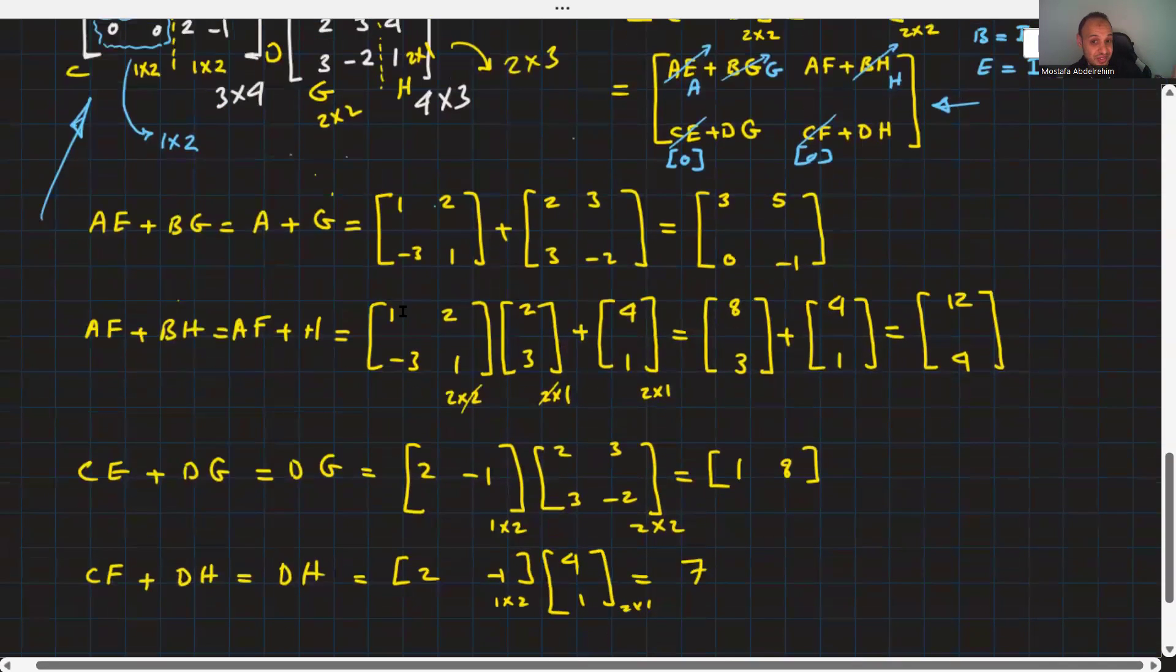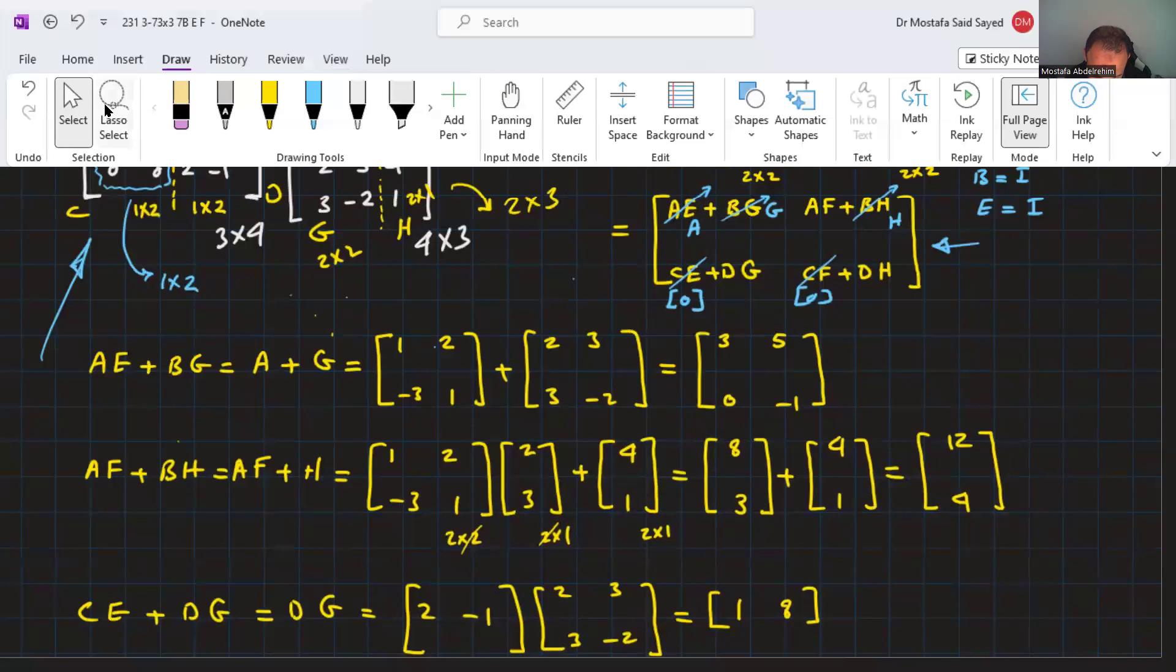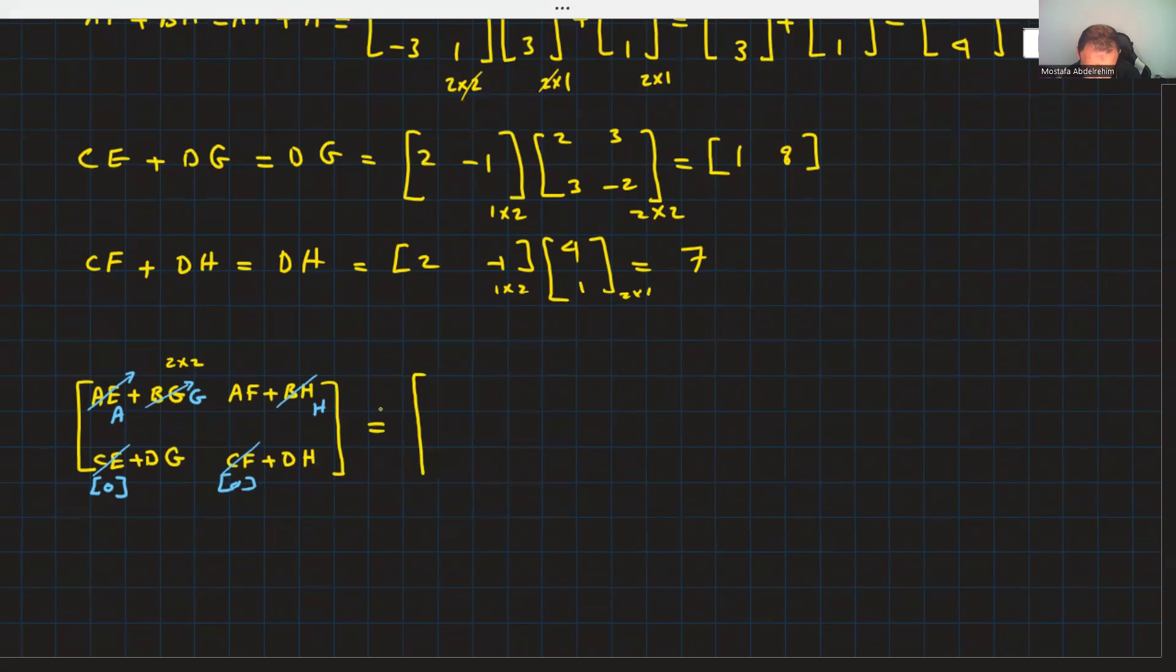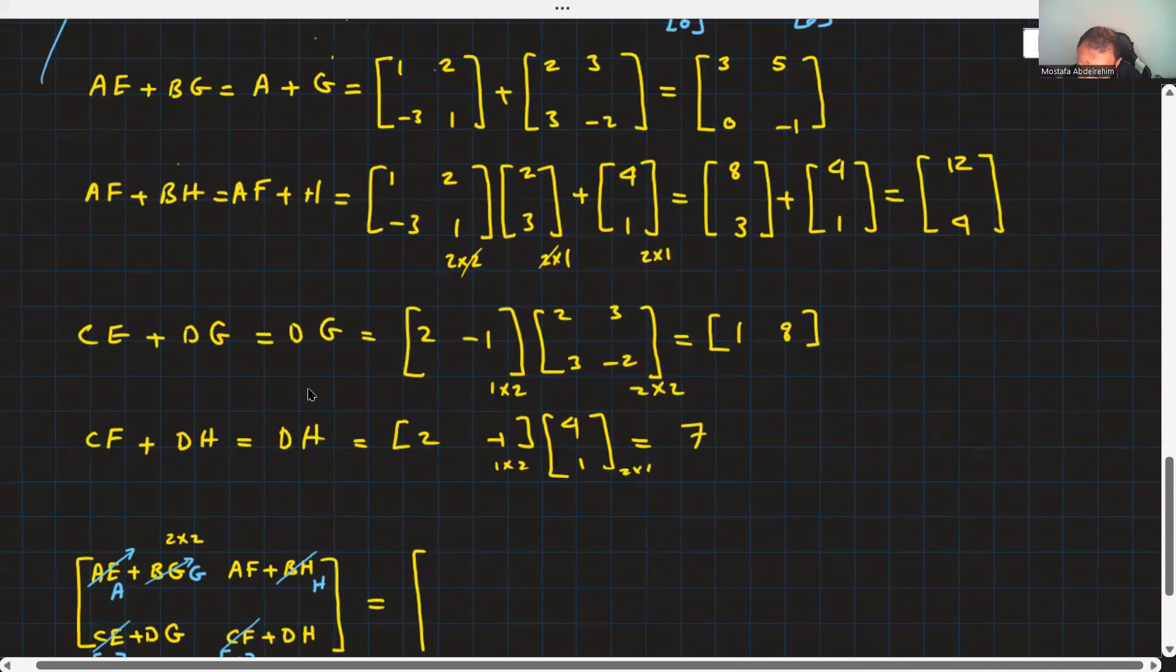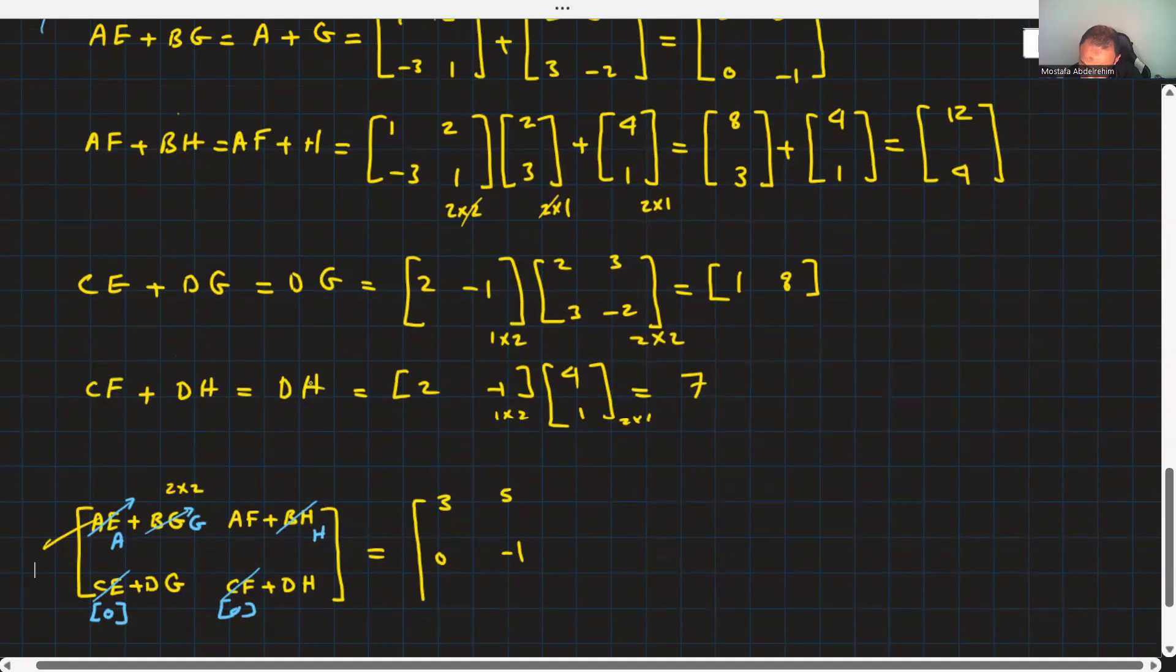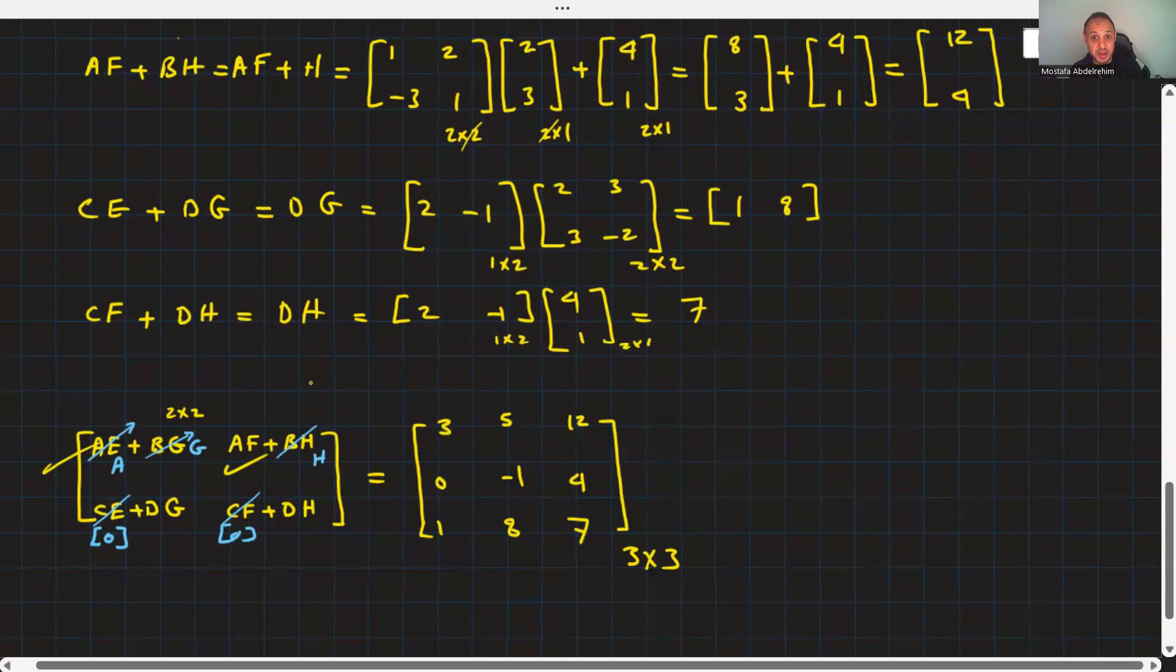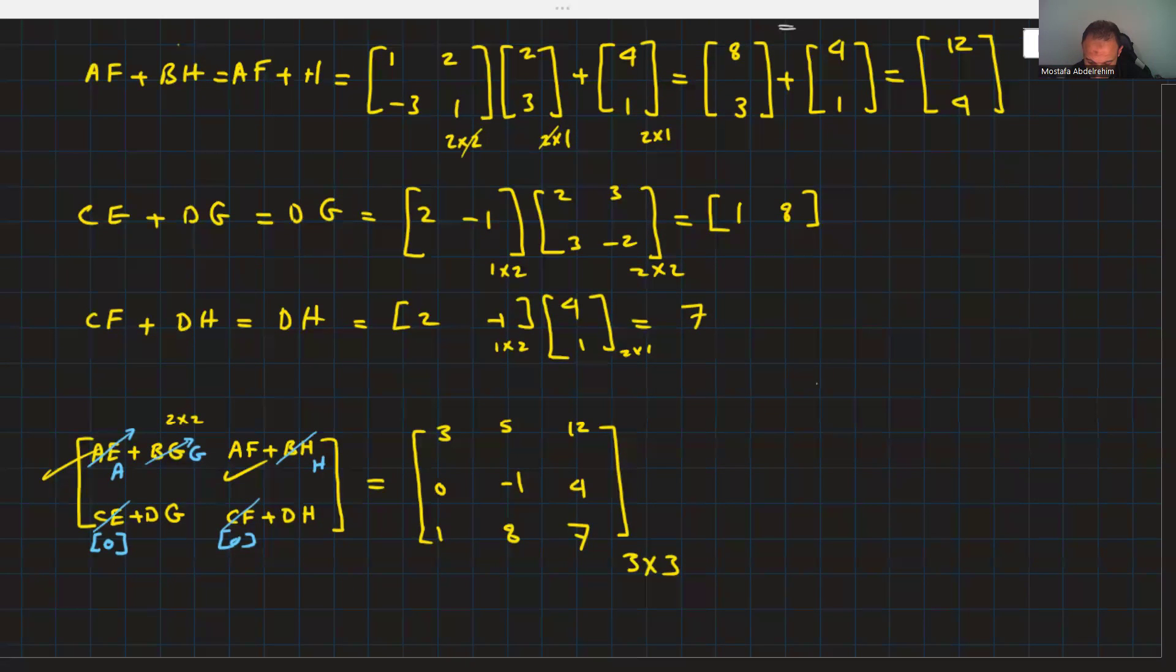So, now we can write down the solution. AE, BG is 3, 5, 0, minus 1. That block is finished. AF, BH is 12, 4. That block is finished. CE, DG is 1, 8. And CF, DH, 7. Look, that's a 3 by 3 matrix, just as what we expected for the shape. We finished it.